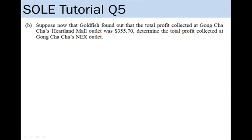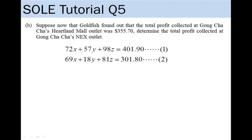In part B, Goldfish now found out that the total profit collected at Gong Cha Cha's Heartland Mall outlet was $355.70 and we are required to find out the total profit collected at Gong Cha Cha's NEX outlet. From part A, we already have these two equations. Now with the additional information, we can form the third equation.